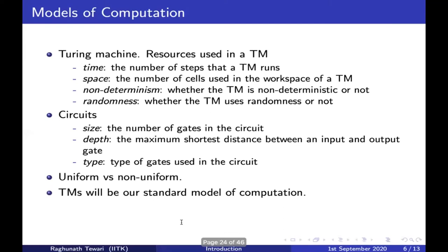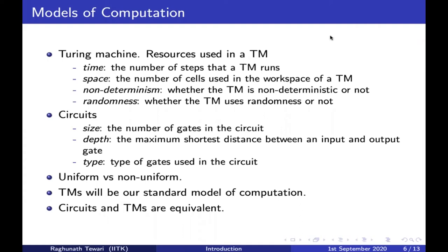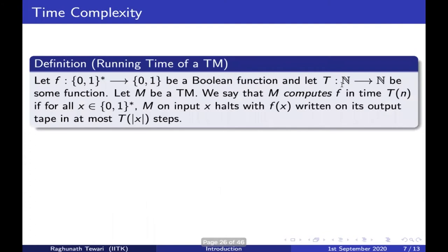A Turing machine will be our standard model of computation because it resembles any physical computational device — your laptop, computer, or cell phone. Circuits and Turing machines are actually equivalent: whatever you can do using a Turing machine can be done by a circuit family, and whatever you can compute by a circuit family you can do by a Turing machine. When we study circuits more formally we will define circuit families properly.